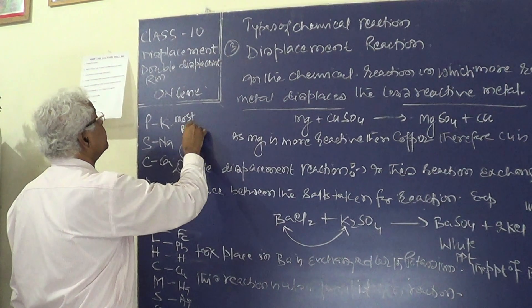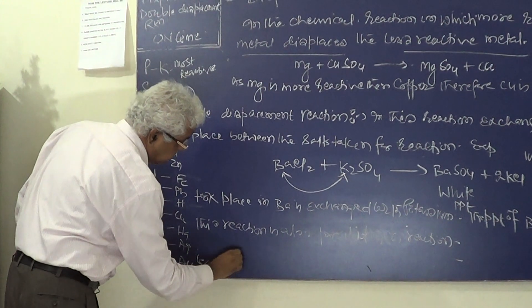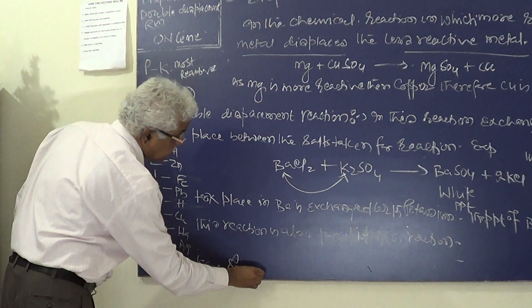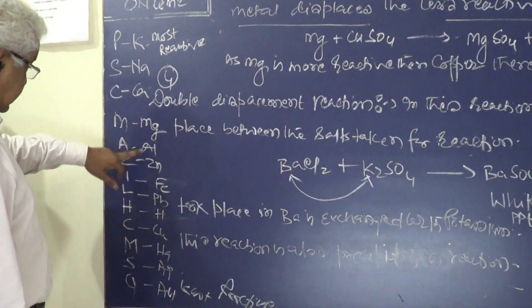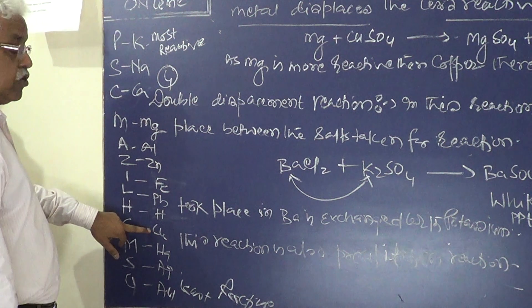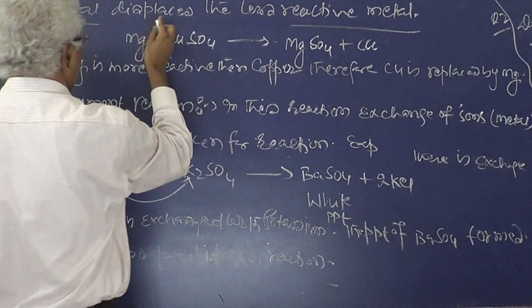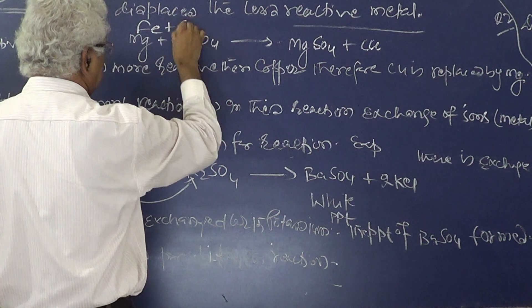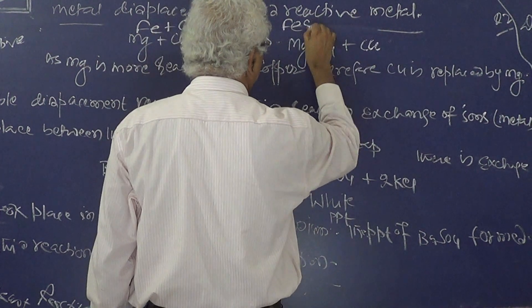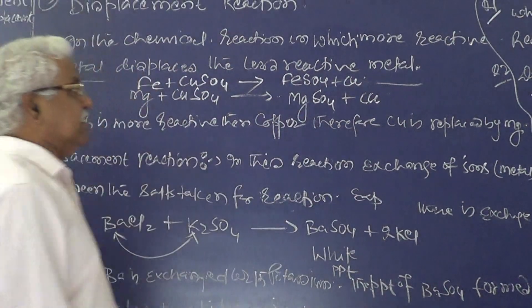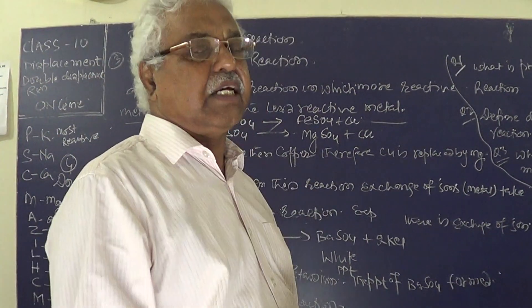Most reactive at the top, least reactive at the bottom. Similarly, iron will replace copper because iron is more reactive than copper. The equation is: Fe + CuSO₄ → FeSO₄ + Cu. In both cases, the more reactive metal displaces the less reactive metal — this is the displacement reaction.